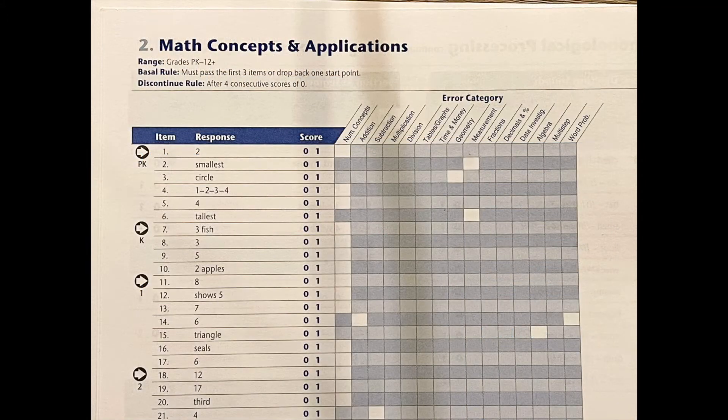When beginning the subtest, the student must pass the first three items or you will need to drop back one start point. Once the student has received four consecutive scores of zero, you will discontinue the subtest.